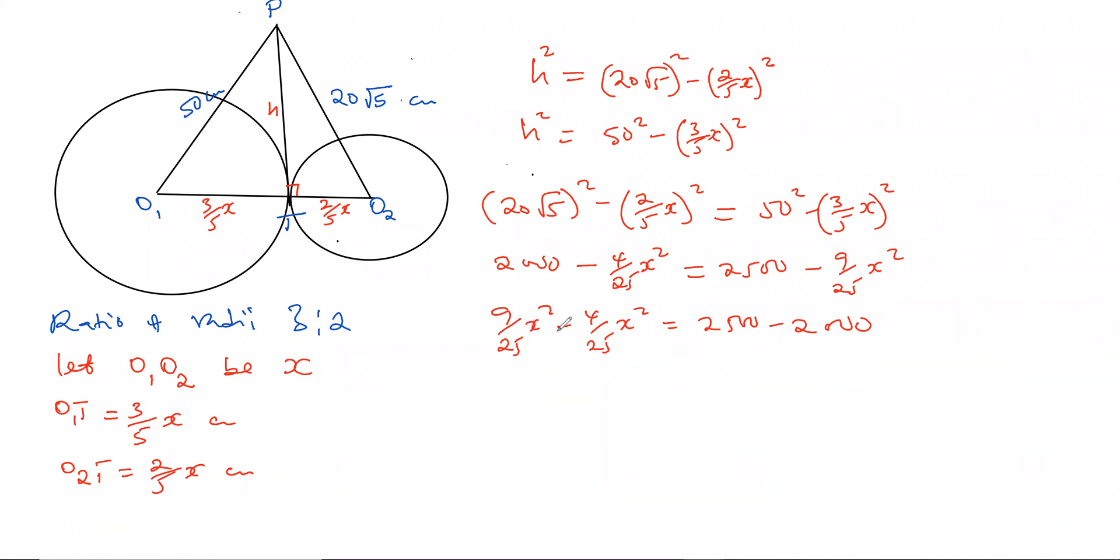I have 9 over 25 X squared minus 4 over 25 X squared equals 2500 minus 2000. 9 over 25 minus 4 over 25 is 5 over 25, which is 1 over 5. X squared equals 500 times 5, which looks like 2500 again. Then the value of X will be the square root of 2500, which is 50. So it means that O1O2 equals 50 centimeters.